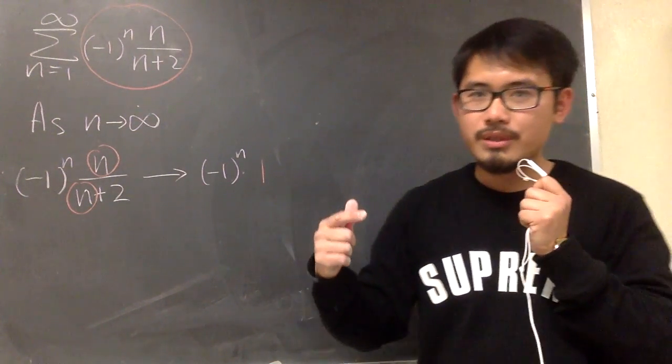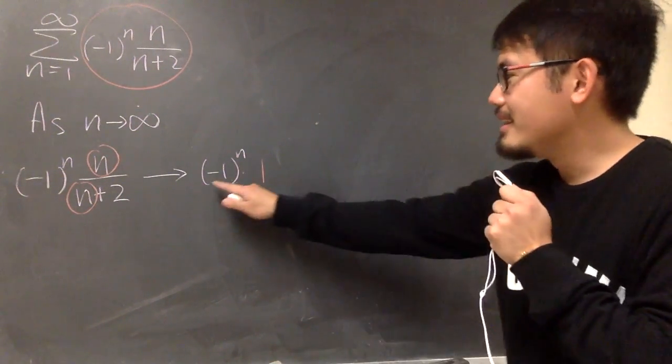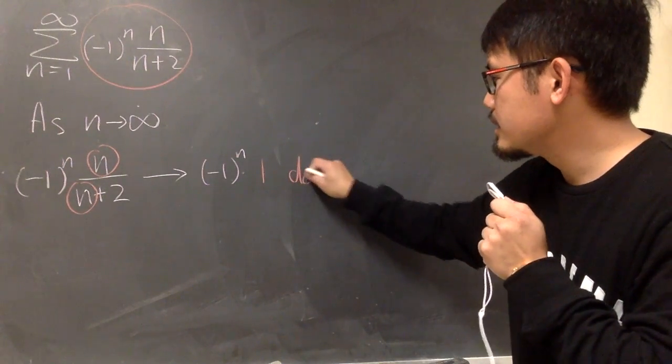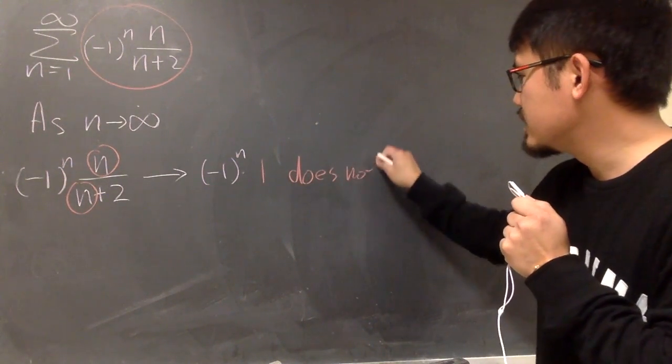This will never approach to a number, right? This right here, the limit of this, does not exist.